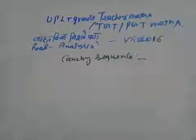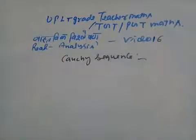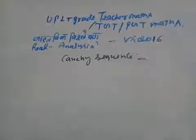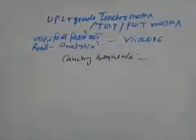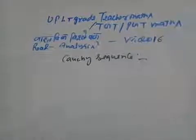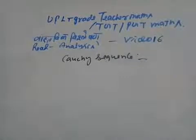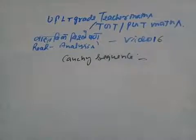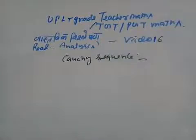Welcome to UPLTK teachers mathematics and TGT-PGT real analysis video number 16. Today we cover: what is the Cauchy sequence? A sequence xn is called a Cauchy sequence if for every epsilon greater than zero, there exists a positive integer n-not (n₀).